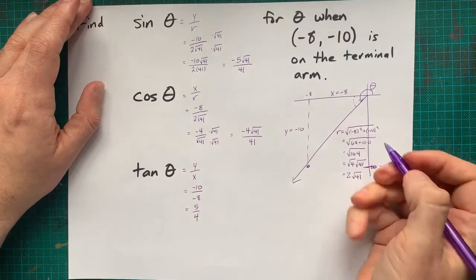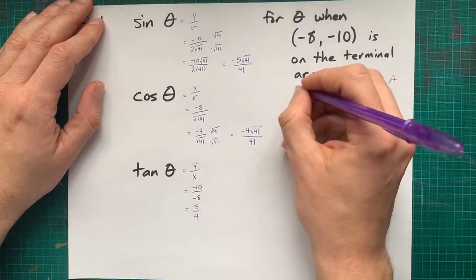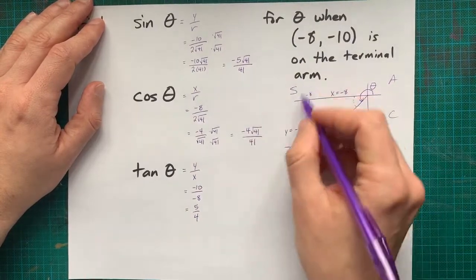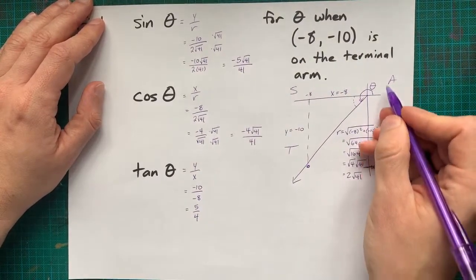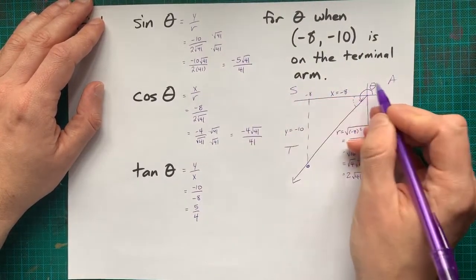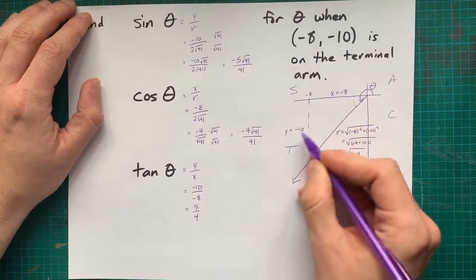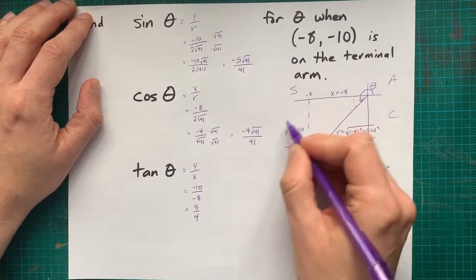Now, that makes sense to me. I know something called the cast rule, which tells me what's positive in each quadrant. Cos is positive here. Sine is positive here. They're all positive here. And only tan is positive in this quadrant.